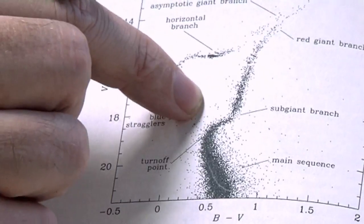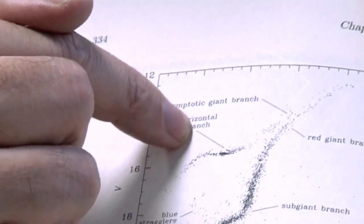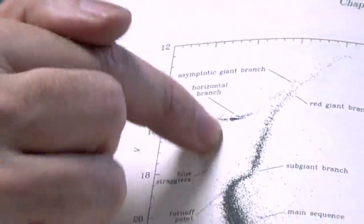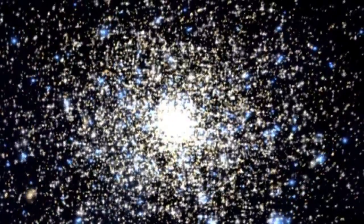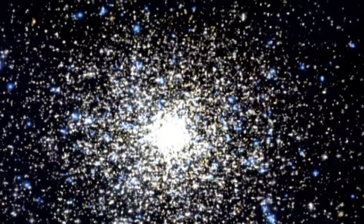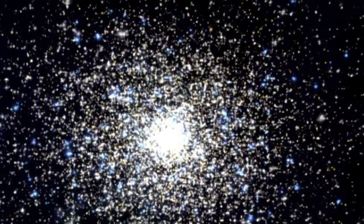Where the main sequence ceases to be populated, these are the stars that have just recently died. And because we know how long stars that should be here would live for, we can actually use that to figure out how old this cluster is. So in this case, we know this particular globular cluster is about 12 billion years old.